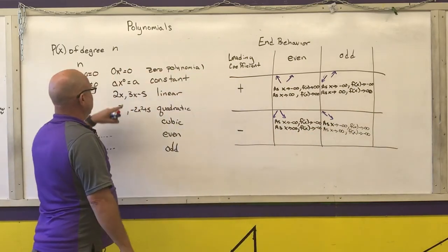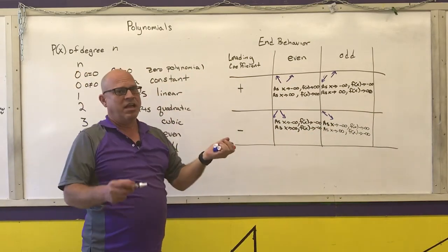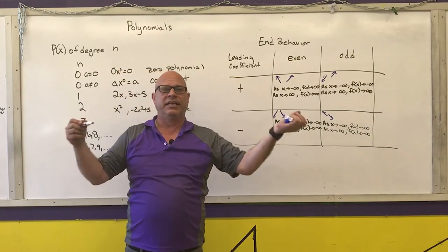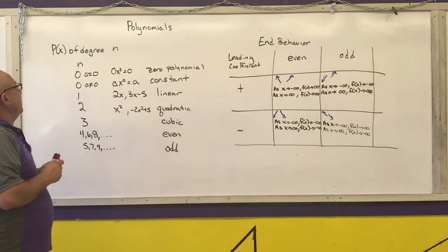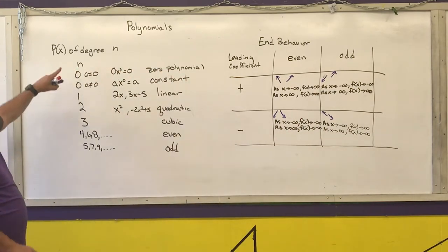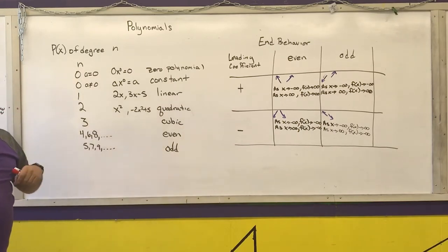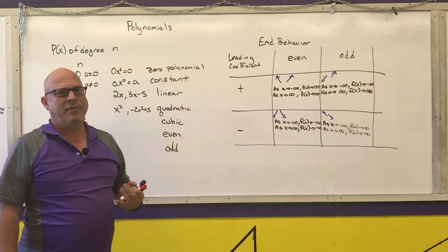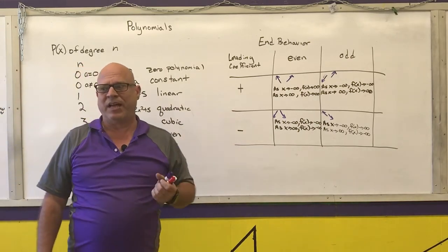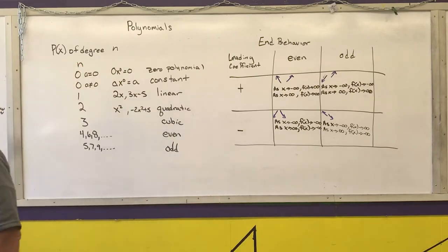Understanding these arrows — or the formal mathematical end behavior notation — will help you sketch graphs of any generic polynomial function. End behavior is based on the degree of the polynomial for degree 1 or higher. If the degree is 0, end behavior is just a horizontal line at that constant; the zero polynomial is the X-axis itself.